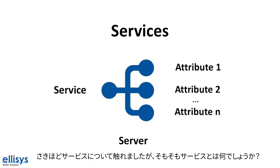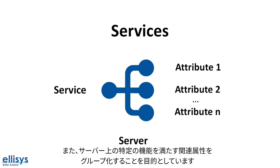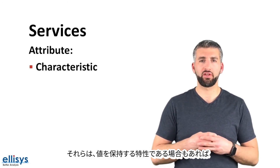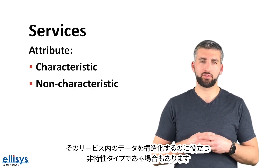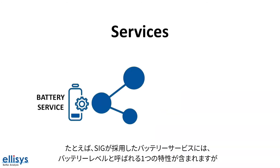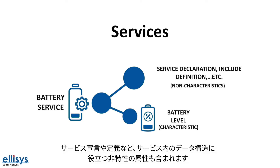We mentioned services before, but what is a service? A service is a grouping of one or more attributes, meant to group together related attributes that satisfy a specific functionality on the server. Attributes within a service have different types — they could be either characteristics, which hold values, or non-characteristic types, which help structure the data within that service. For example, the SIG adopted Battery Service contains one characteristic called the battery level, but also contains other non-characteristic attributes such as the service declaration, include definition, and others.